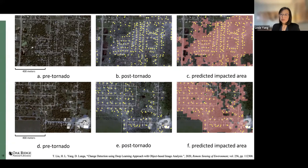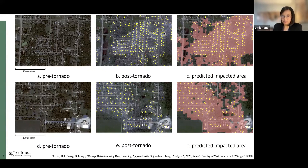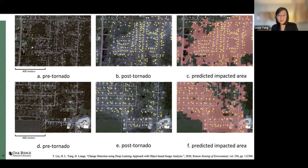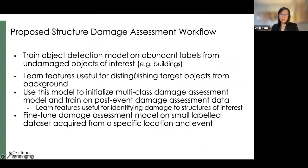This approach gives first responders an idea of how large an impact area is and estimates how many structures and people will be affected by the tornado or natural disaster. If we want more detailed information — for example, individual structural damage labels — then we need to do another type of work called damage assessment at the structural level.